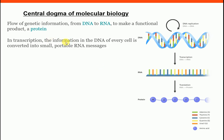In transcription, the information in the DNA of every single cell is converted into small, portable messenger RNAs. So from DNA we get messenger RNA — that process is transcription. Remember: DNA making a new copy of DNA is replication; DNA to RNA is transcription.